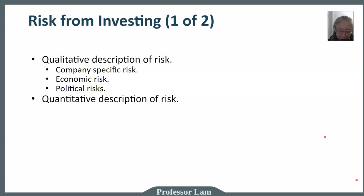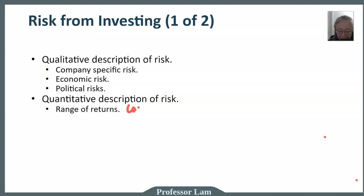In addition to qualitative descriptions, there are quantitative descriptions of risk. We can talk about range of return — how low can the return be and how high can it go. For example, in one year you may experience negative ten percent — losing ten percent of your investment — or you may gain thirty percent. That range describes the possible outcomes.